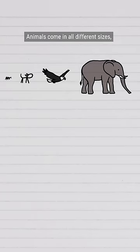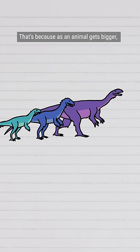Animals come in all different sizes, but most of them stay about the same size over evolutionary time. That's because as an animal gets bigger, it gets a little bit stronger, but a lot heavier, and eventually it can no longer lug around its own weight.